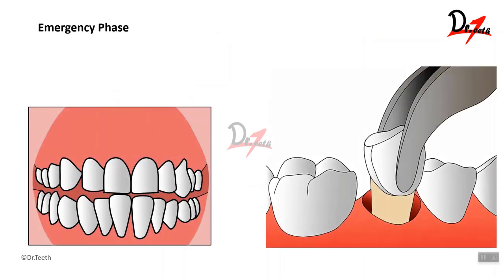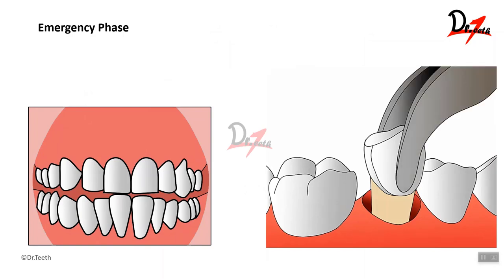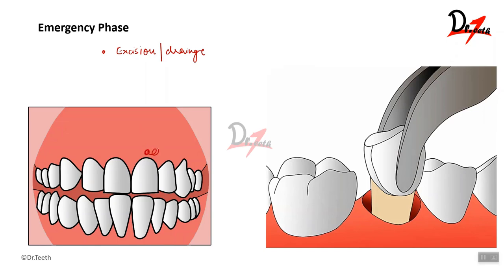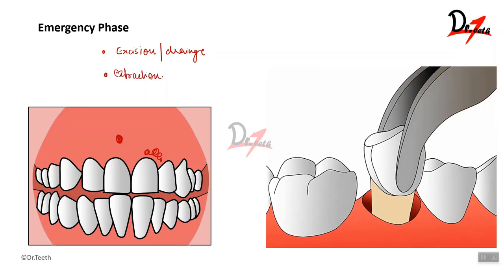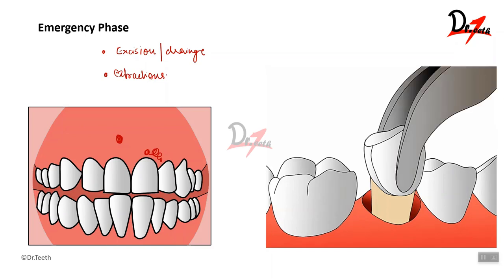First, talking about the emergency phase: if the patient comes to you with swelling or pain in the case of teeth which have a hopeless prognosis or advanced bone loss, then in the emergency phase what we do is either excision and drainage — if there is a periodontal swelling or periapical swelling — or we do extractions of the hopeless teeth. These are the main emergency treatments carried out in the emergency phase.